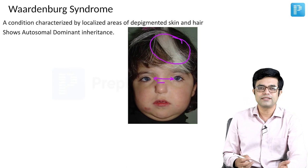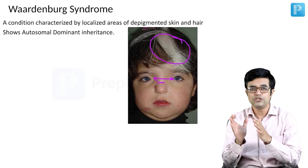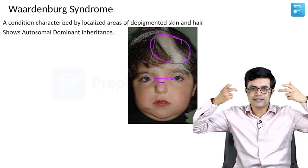This increased gap between the eyes is not exactly hypertelorism. It is more correctly called telecanthus. In telecanthus, the gap between the medial canthi is more than normal, but one of the eyes usually has some degree of strabismus. If you calculate the interpupillary distance, that is always normal. In hypertelorism, where only the eyes are moved away, the interpupillary distance will also be increased.